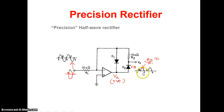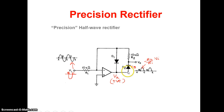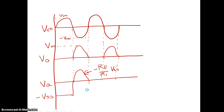During the negative half cycle, diode D2 is forward biased and transfers the voltage to the output. You get output equal to minus R2/R1 into Vi, and diode D1 is reverse biased. The output waveform has a maximum voltage of Vm, with Vout equal to minus Rf/R1 into Vi during the negative half cycle of the input.